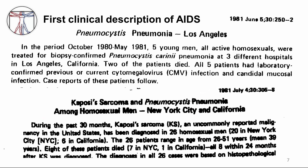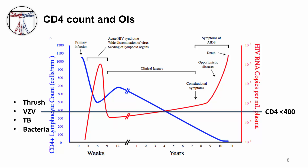PCP and Kaposi's sarcoma were the first clinical descriptions of AIDS in the United States. We use the number of CD4-positive T cells as an important measure to guide clinical decisions, as they predict which opportunistic infections can occur at various points. When CD4 count is less than 400 or even higher — a relatively well-preserved CD4 count — the following can be seen: thrush, VZV, TB, and bacterial infections.